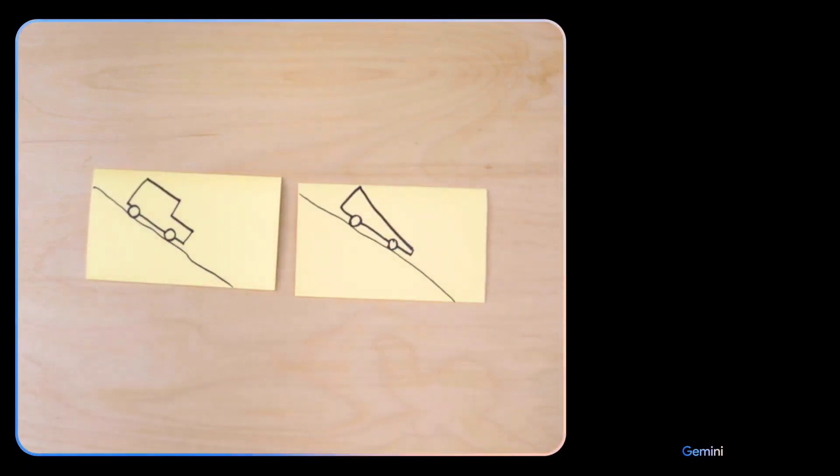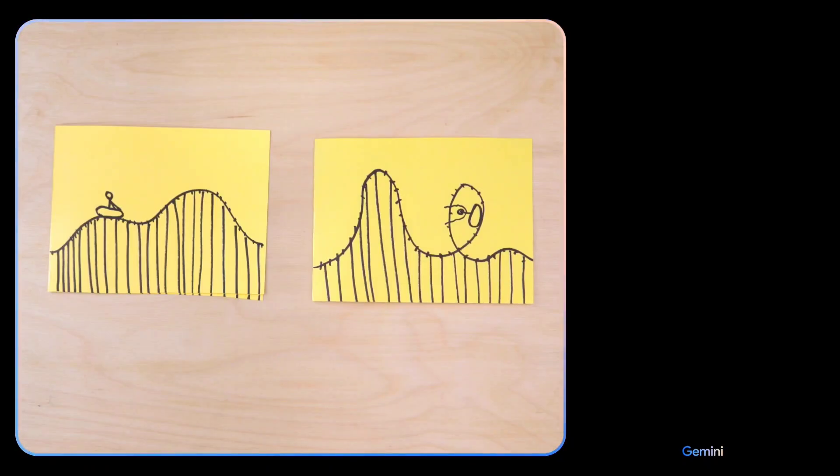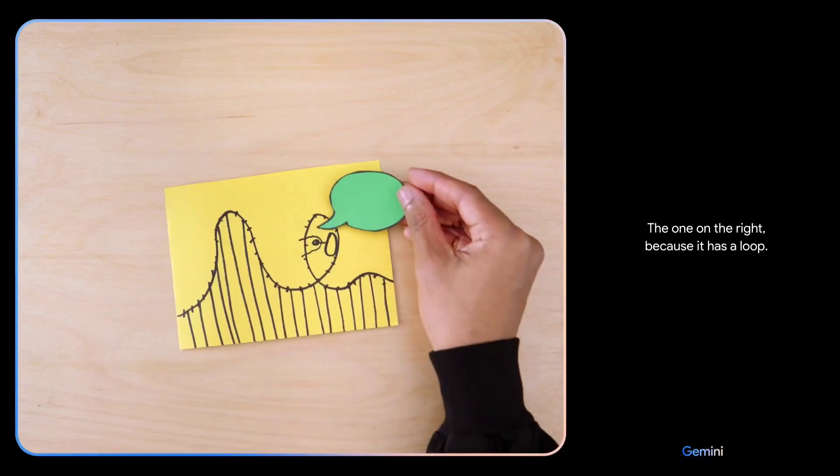Based on their design, which of these would go faster? The car on the right would be faster. It is more aerodynamic. Which looks more fun? The one on the right because it has a loop.